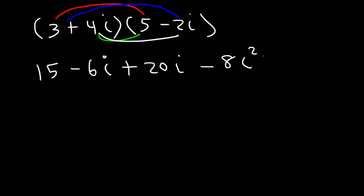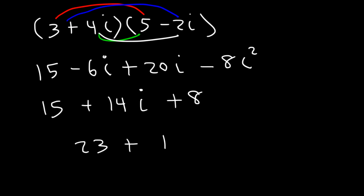Now let's combine like terms. Negative 6i plus 20i — that's 20 minus 6 — is positive 14i. And i squared is negative 1, so negative 8 times negative 1 is positive 8. Now we can add 15 plus 8, which is 23. So the answer is 23 plus 14i.